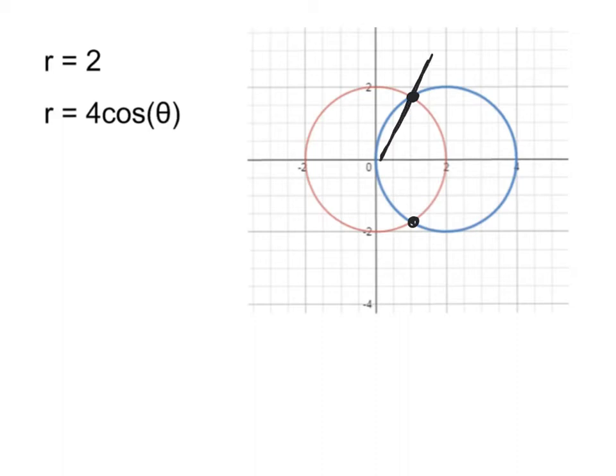Remember the origin is where all of this is referenced so I'm going to do that. So, first of all the blue circle is 4 cosine theta and the red circle is 2 just so you make sure and see that.